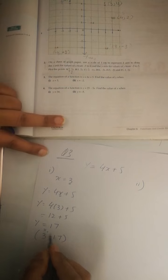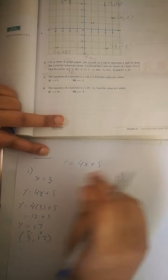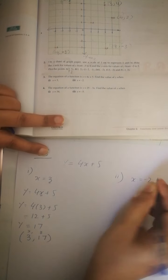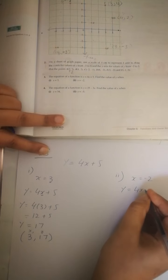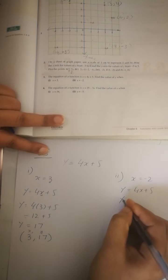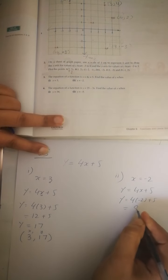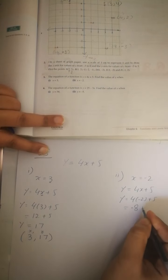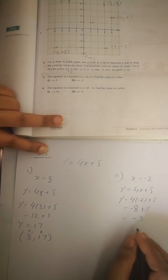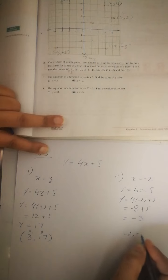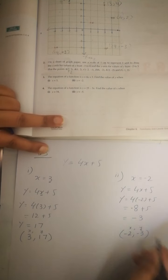We write the x value first, then y. For the second value, when x = -2, using the same equation: y = 4(-2) + 5 = -8 + 5 = -3. So when x = -2, y = -3. The coordinate pairs are written as (x, y).